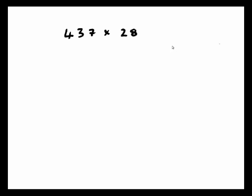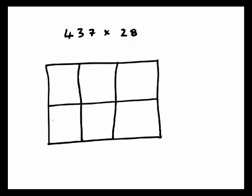Right now, box multiplication. Here's another way of doing some multiply sums that make it very straightforward how to manage the carries and how to manage the multiplying. So I'm going to do 437 times 28, and what I'm going to do is I'm going to draw a box. As you can see, the box has got three columns across the top and two columns down the side.